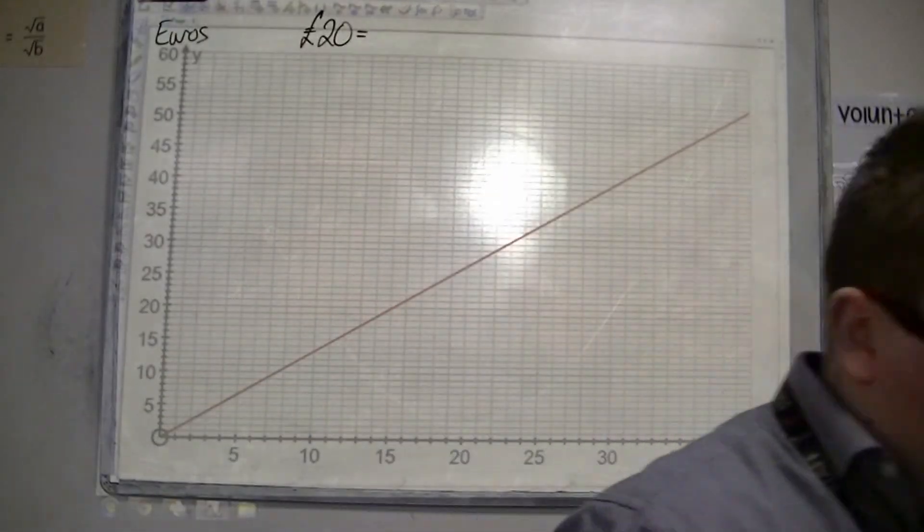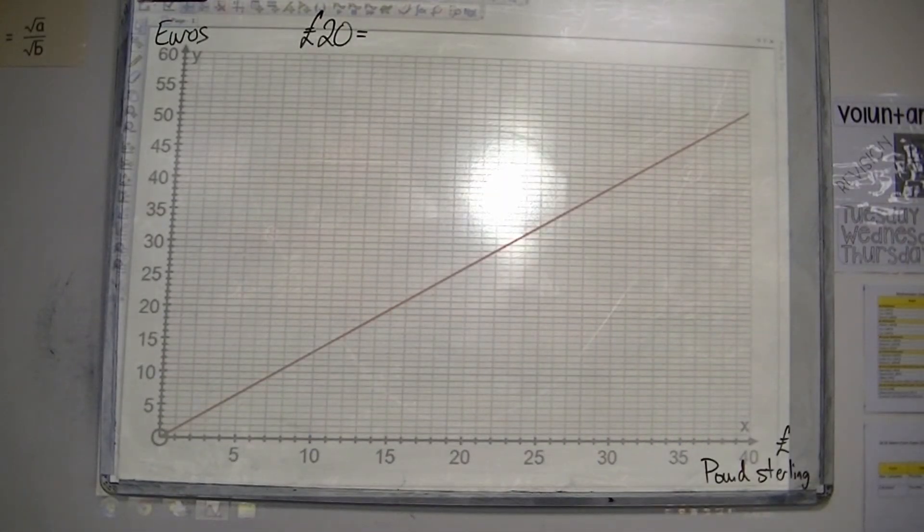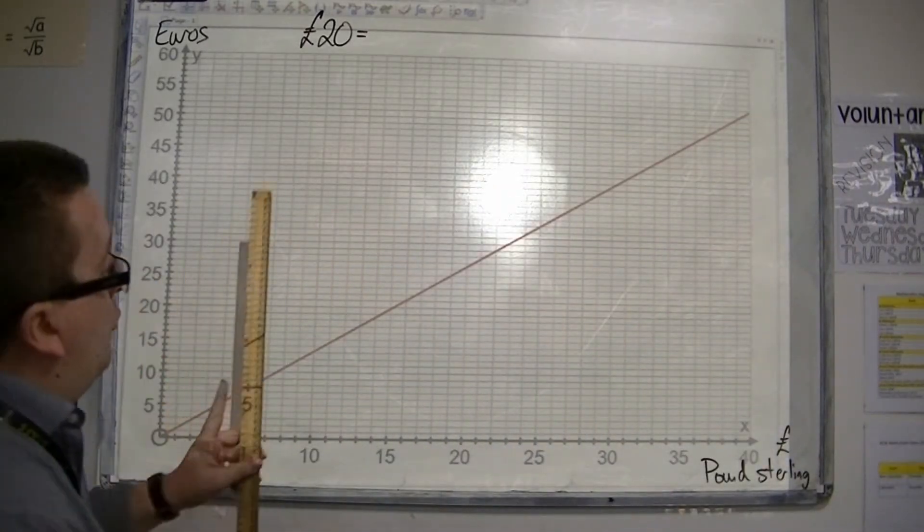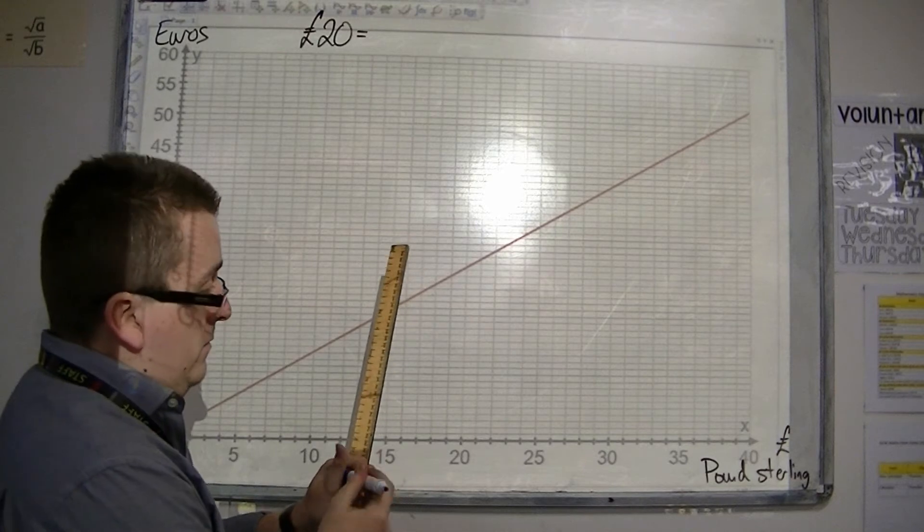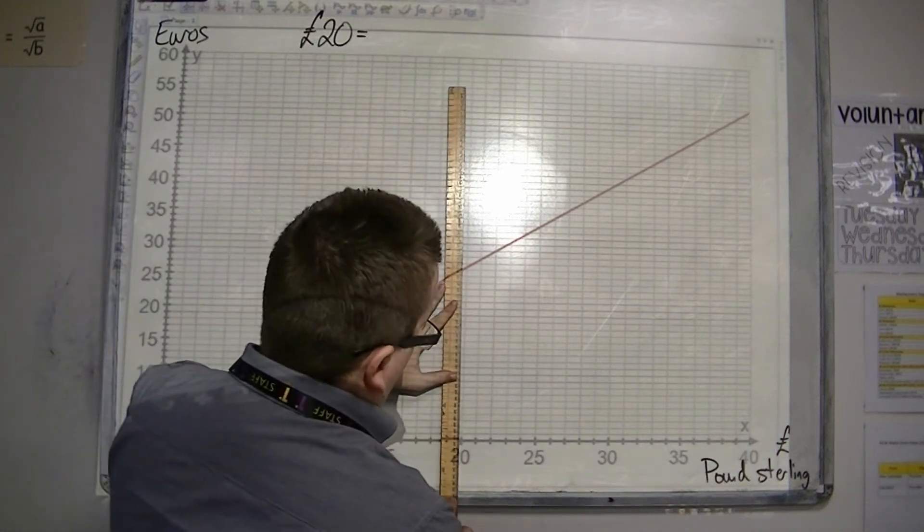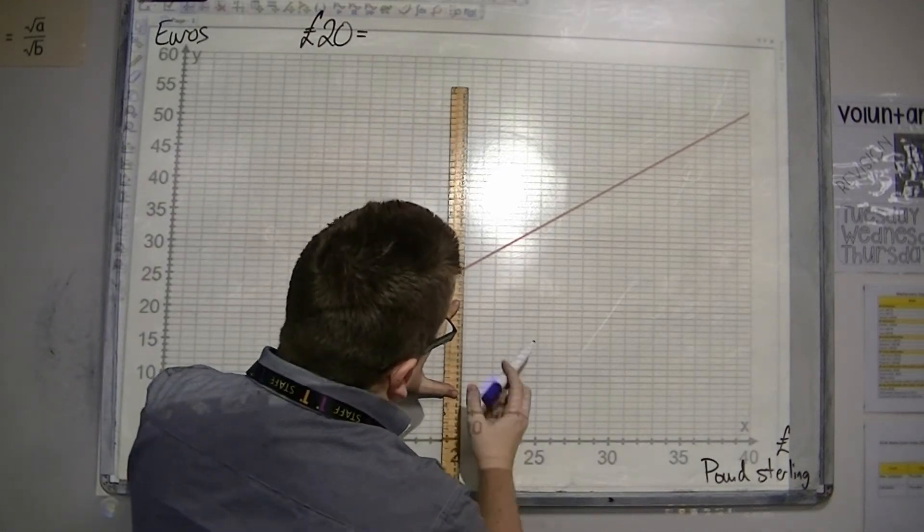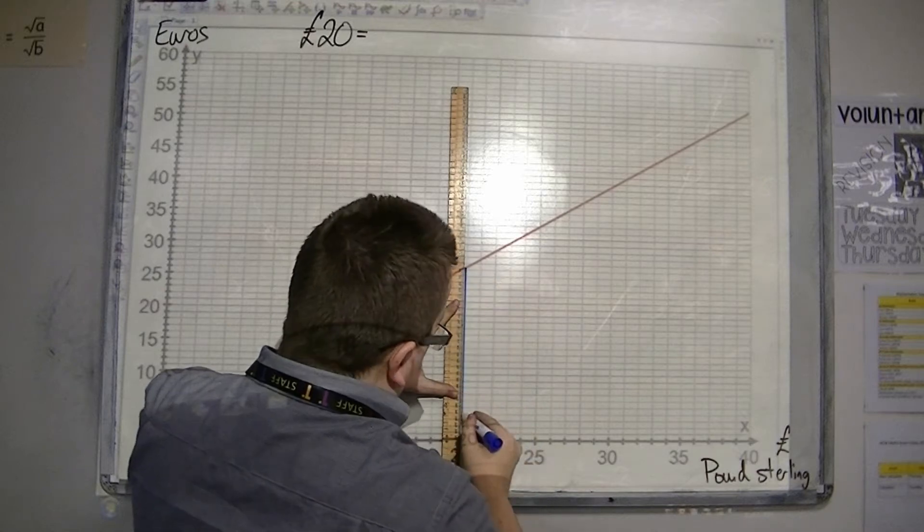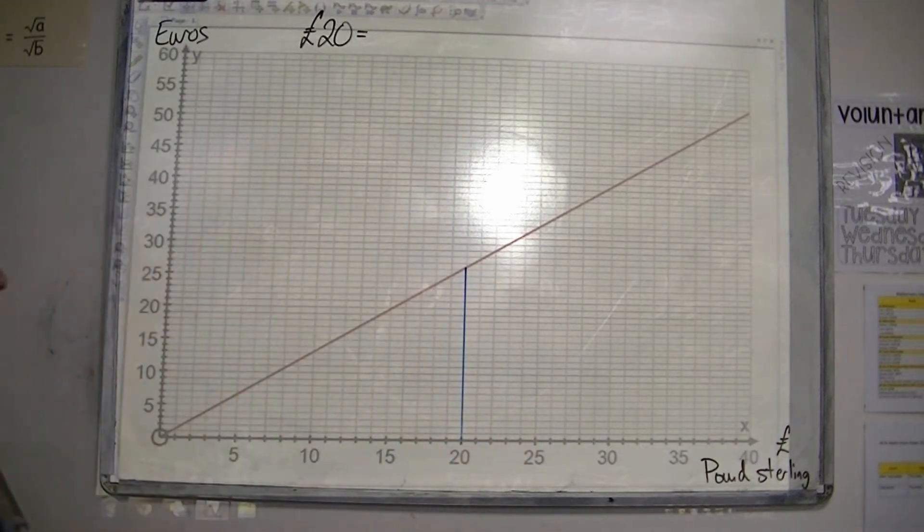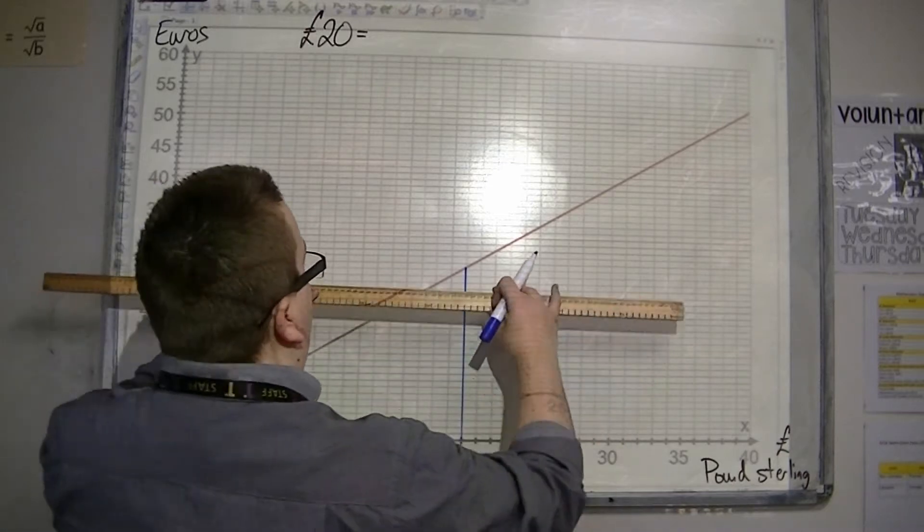So, let's get a ruler. Okay. And then we go from the 20 pounds on the horizontal axis, draw a line, okay, and then up to the line that we're working from. And then,